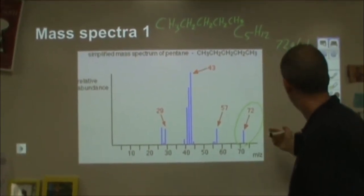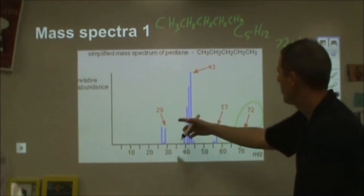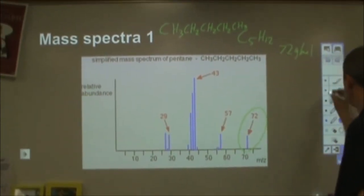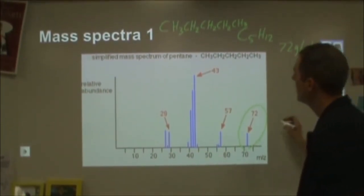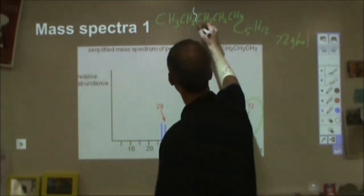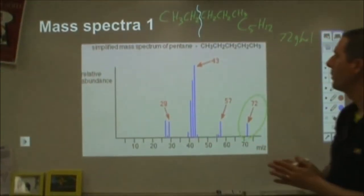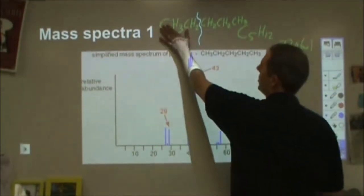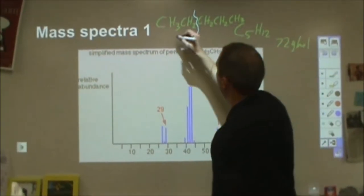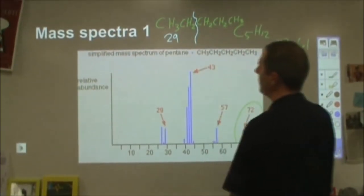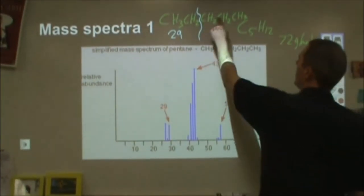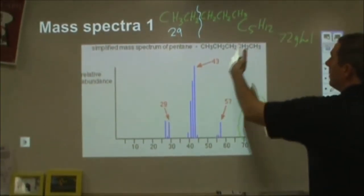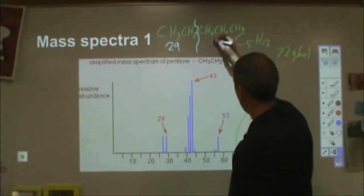Then we can go through and kind of analyze and say, well, what are these other peaks? What's this 29, the 43, and the 57? So if we go ahead and look at splitting this molecule into two fragments, if we break this apart at the carbon-carbon bond there, then we end up with a C2H5, and that's 29 mass units. And here we have C3H7, so there we're looking at a 43.